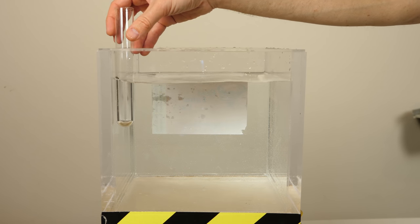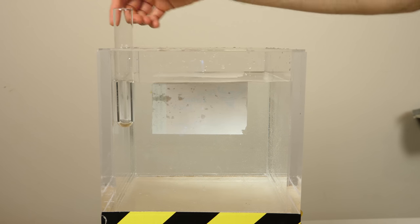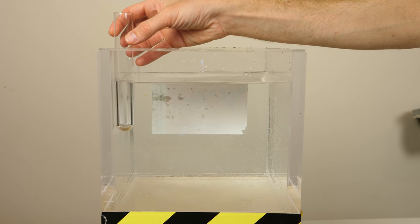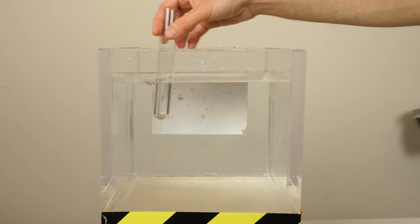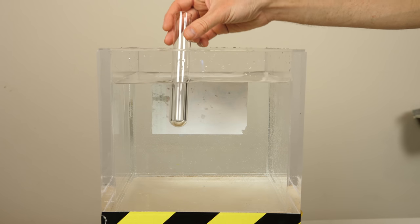And the only way to get it to float really is to constrain it on both sides and try to get it to stay there. And even then, it likes to tip over. But overall, if I try to let it float on its own, it just tips over.